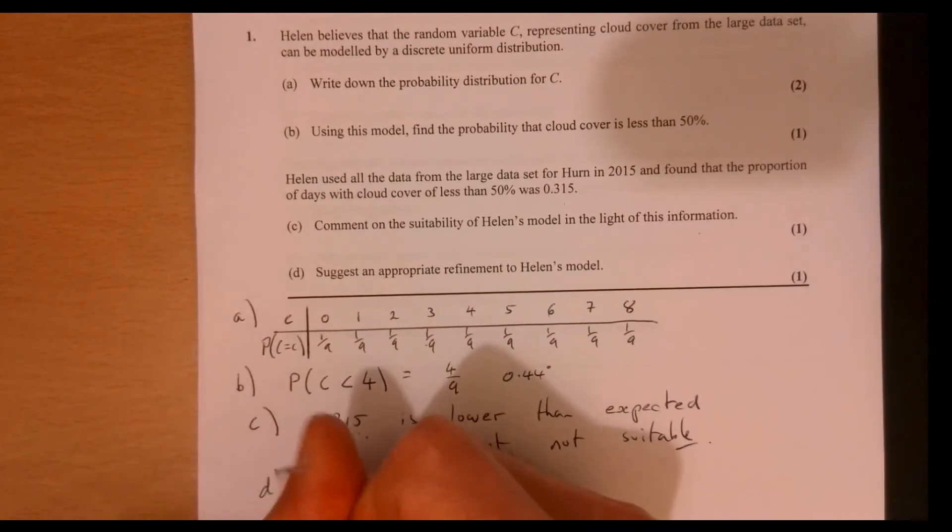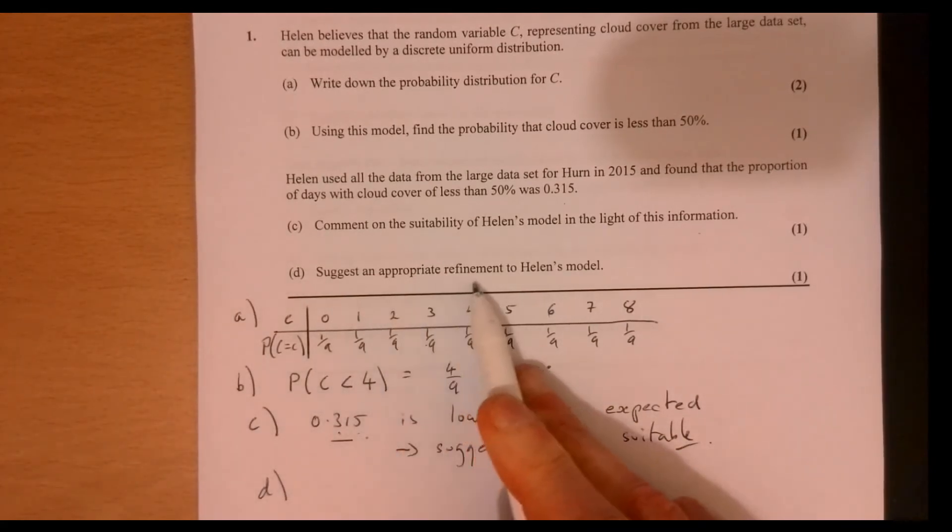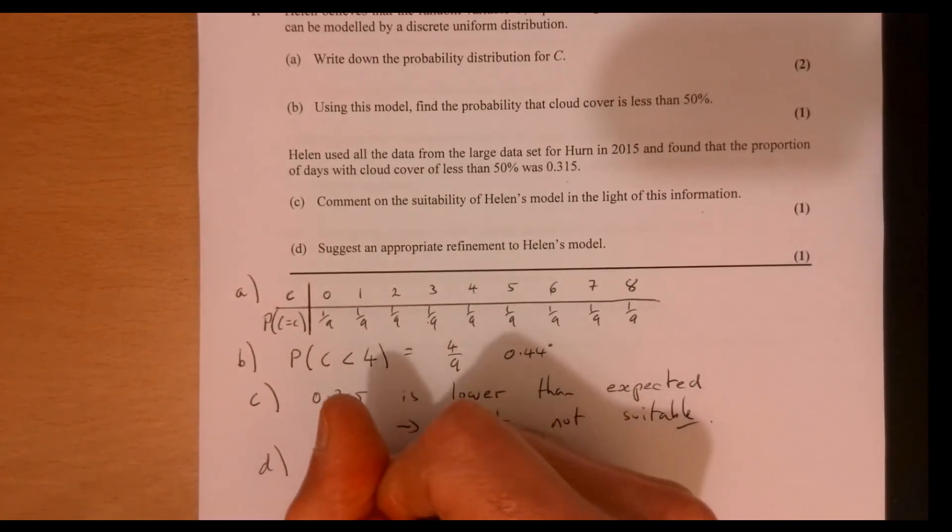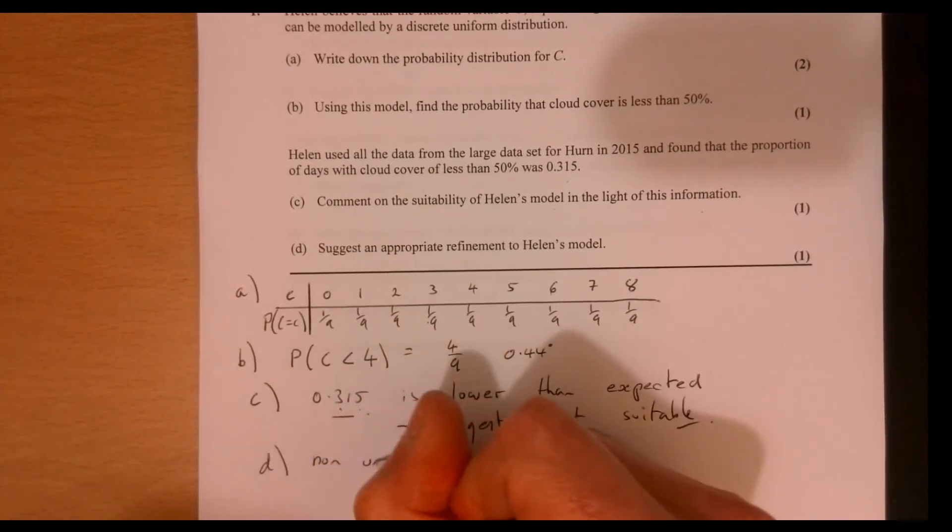And then part D suggests an appropriate refinement to Helen's model. Well, I don't know about you, but maybe a non-uniform model.